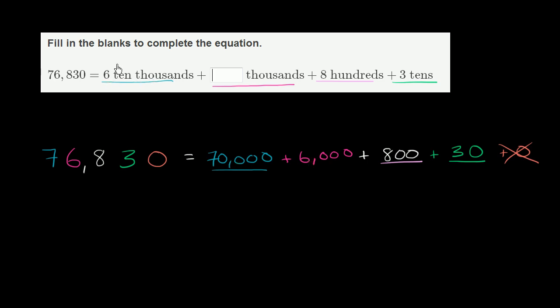So they have six ten thousands, which is the same thing as 60,000. We have 70,000. So they essentially took 10,000 from here and regrouped it someplace. And since these two places are the same, they must have regrouped it into the thousands place. So let's try to do that.